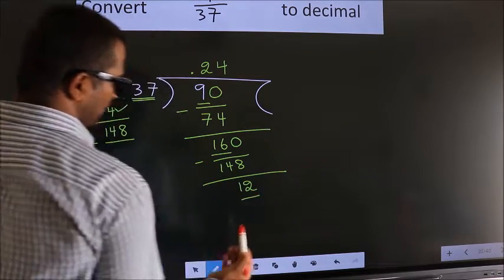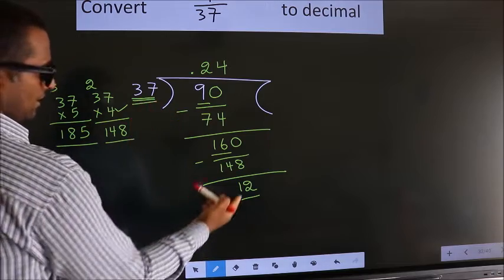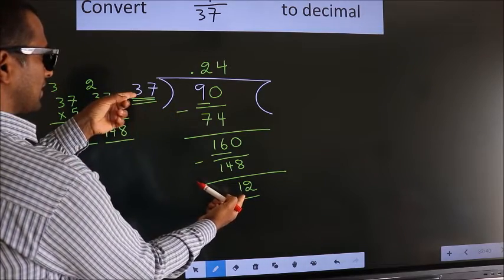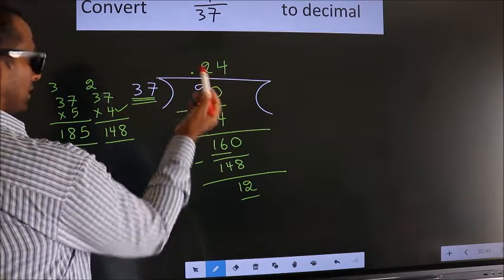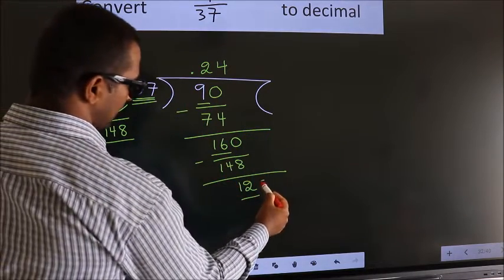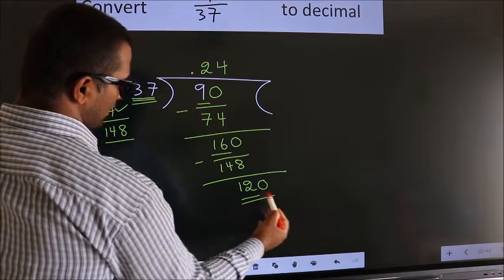Here we have 12. Here 37. 12 smaller than 37. And we already have the decimal. So we can directly take 0. So, 120.